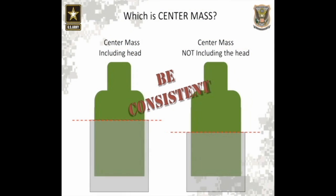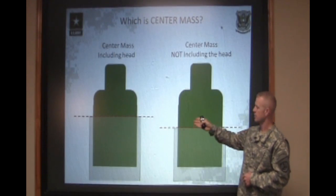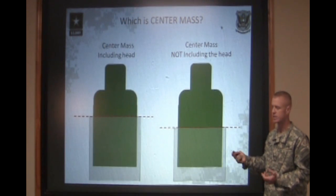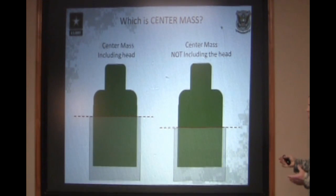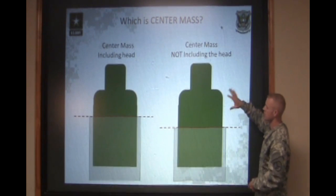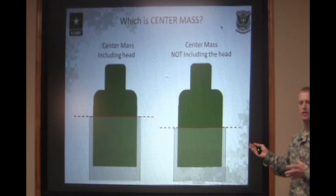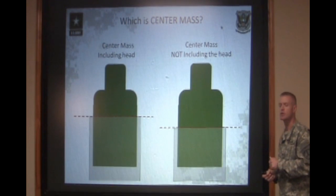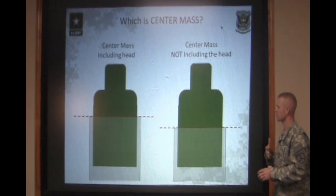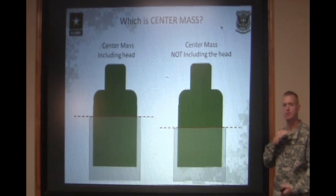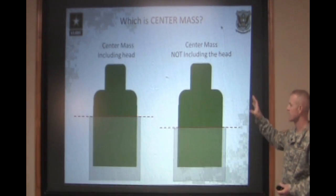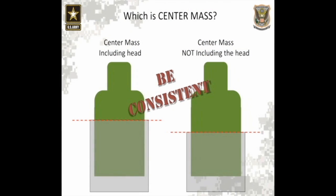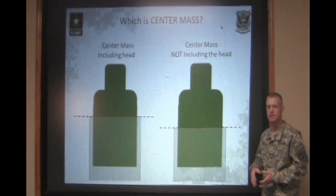Now we have two basic sight pictures. One — the picture on the left — the front sight post is centered on the entire target, including the head. This is what most people see as center mass. The other thing that people call center mass is holding center mass of the body of the target, not including the head. Either one of these is correct — they're both center mass. The important part of holding a good center mass hold is to ensure you do it the exact same way every single time. I personally prefer center mass not including the head — it's the biggest part of the body. At 300 meters, the head of the target can get kind of distorted, but you can always see the bulk of the body.